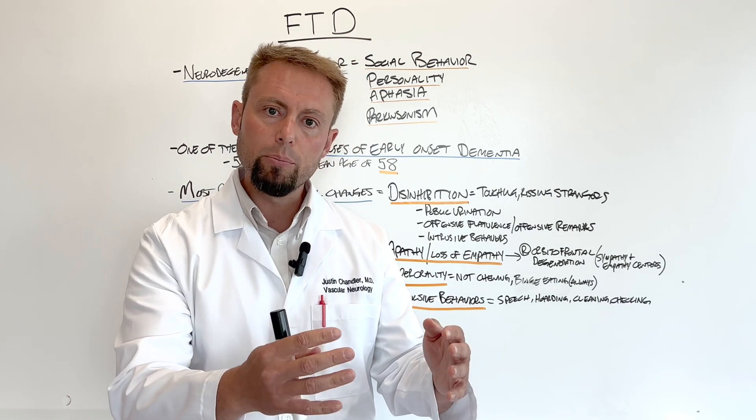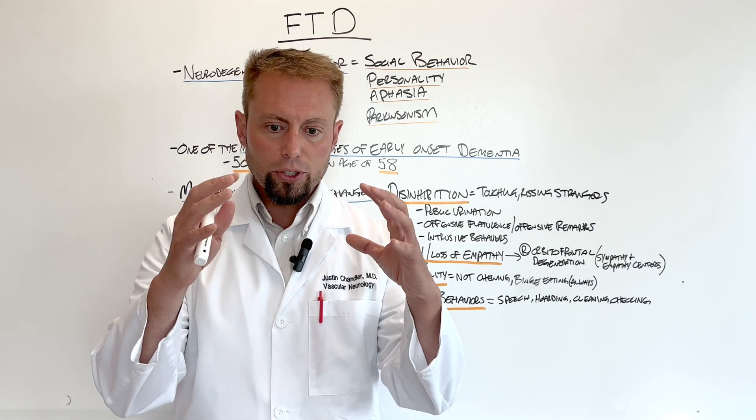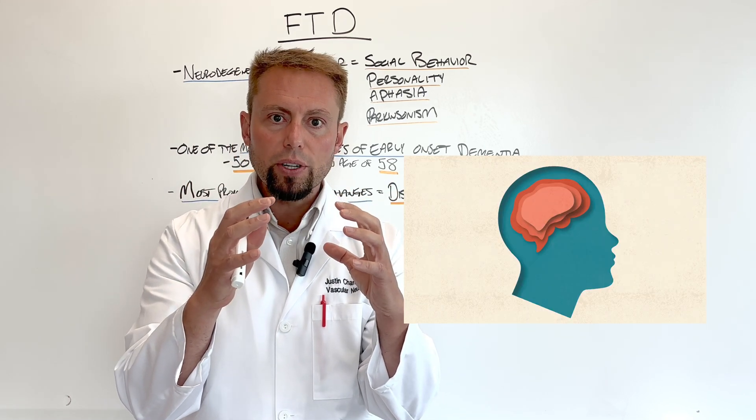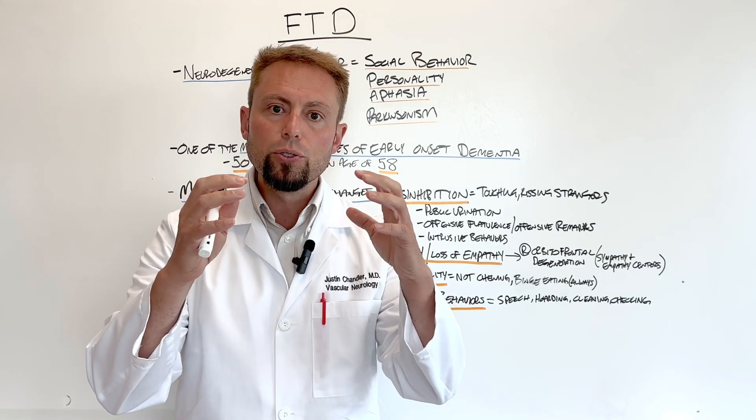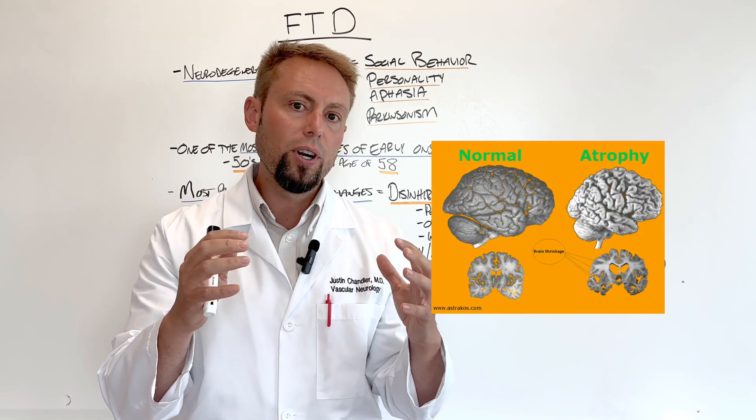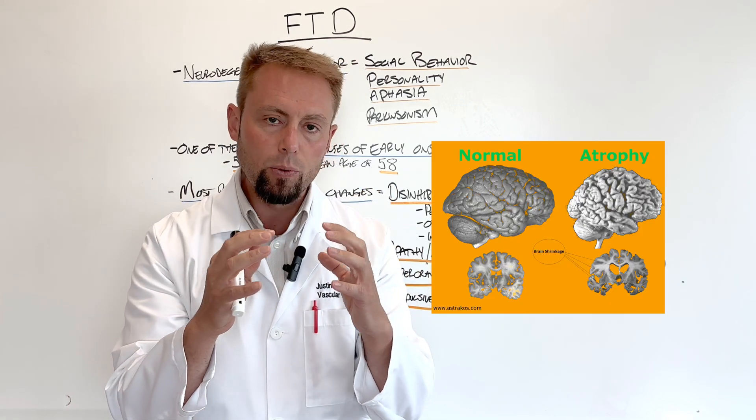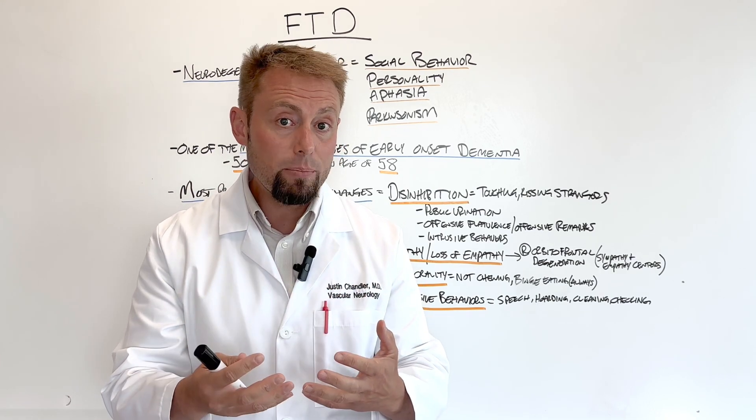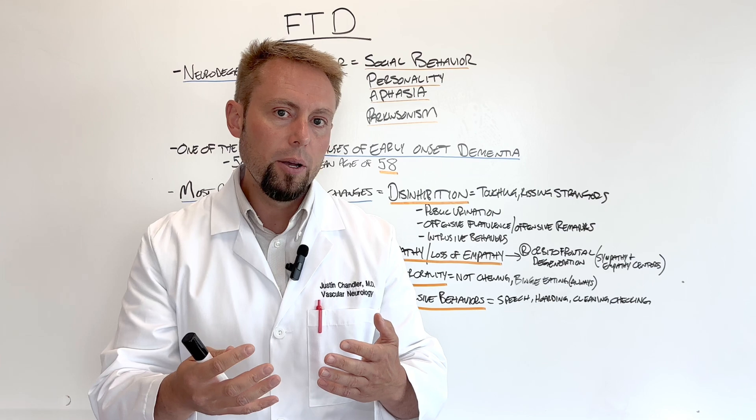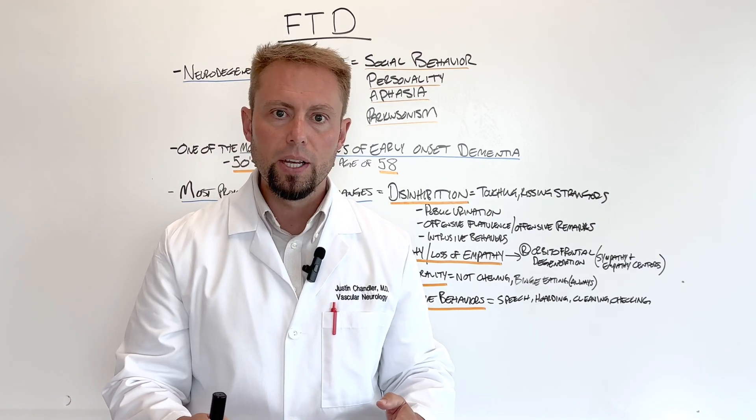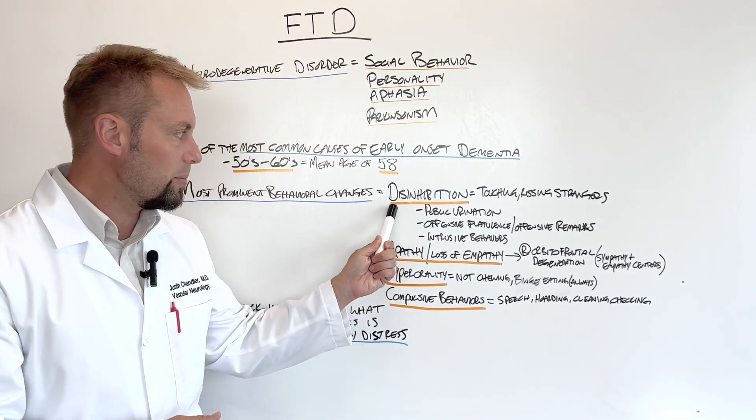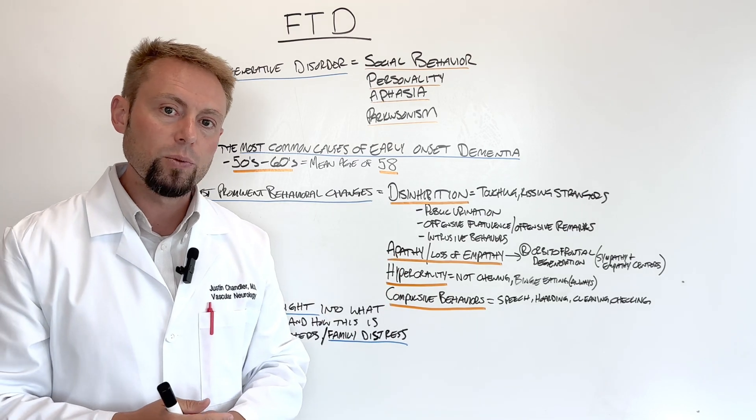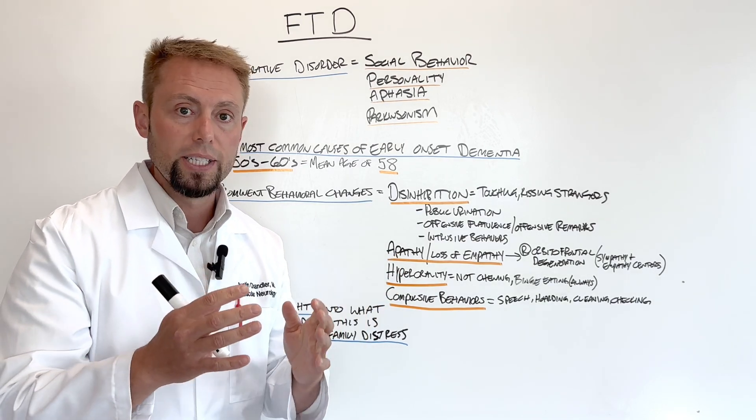In Frontal Temporal Dementia, as the frontal lobe shrinks or experiences cerebral atrophy, as those neurons die, as the neurons in our temporal lobe start to die and wither away, our ability to interact at appropriate times and in appropriate places becomes severely impaired. This is the social problems and the disinhibition that is faced when someone has frontal temporal dementia.